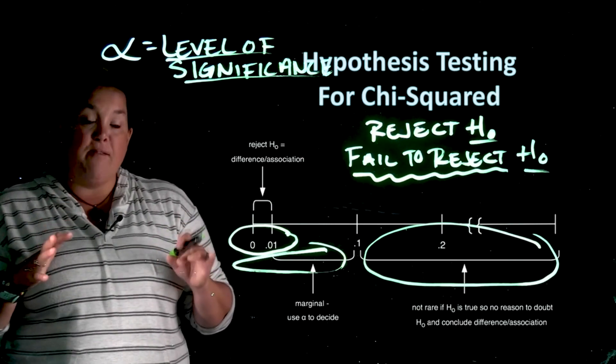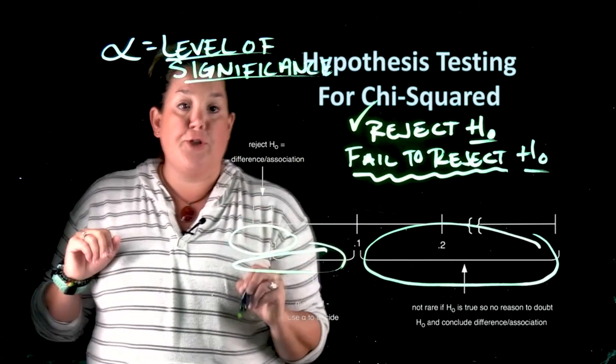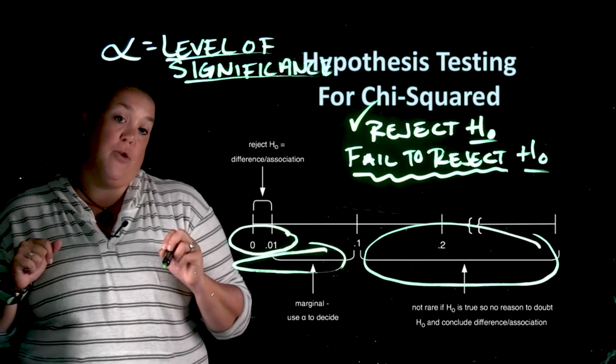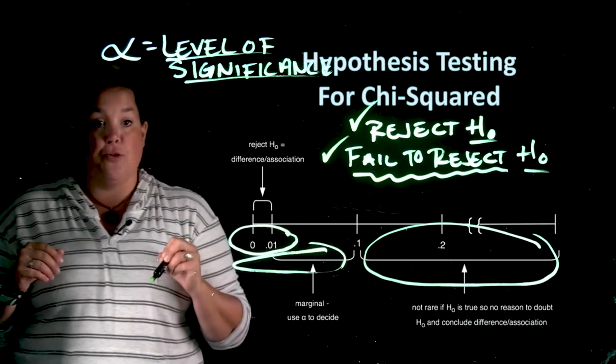So when you have a situation that the p-value is less than alpha, you reject the null. When you have a p-value that is not less than alpha, you make the decision fail to reject the null.